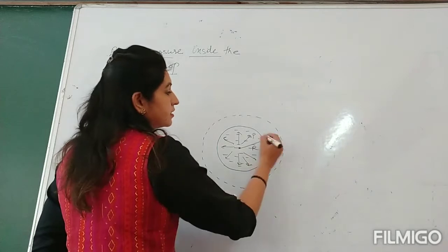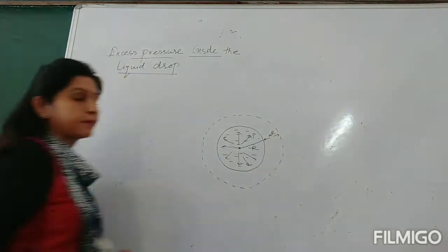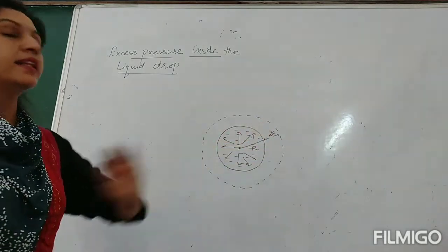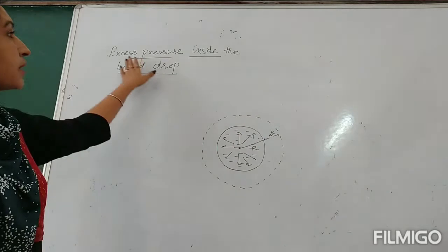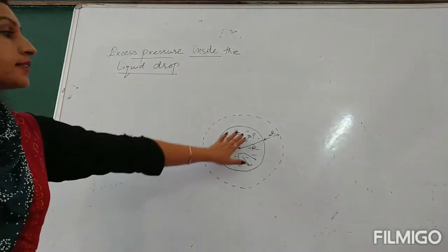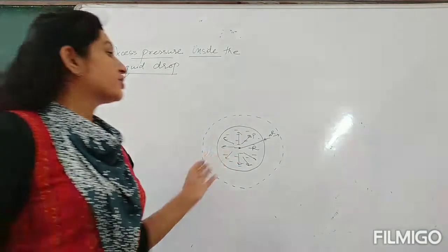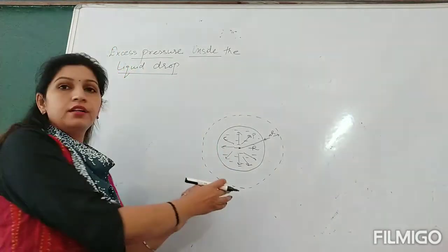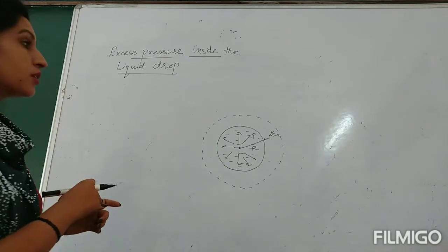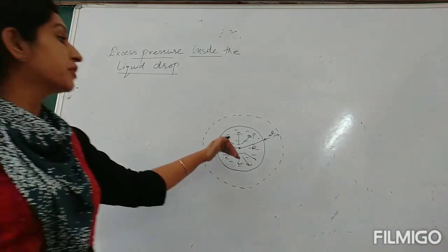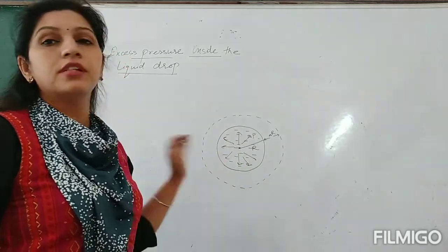Now let us consider the radius has been expanded by delta r. We have to calculate this excess pressure P. To calculate excess pressure, we will use the formula for surface energy. We need to first calculate what is the increase in surface area of this liquid drop.